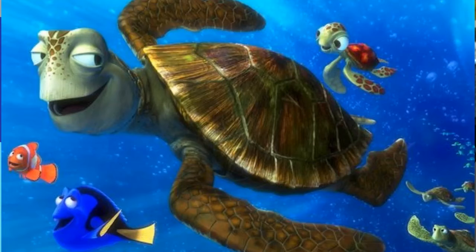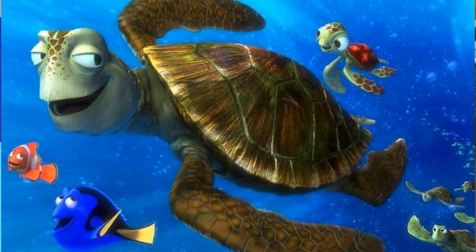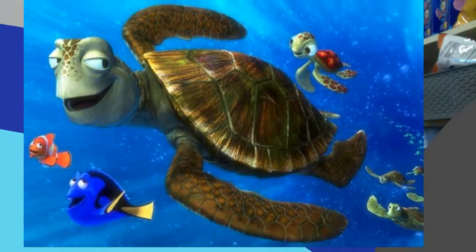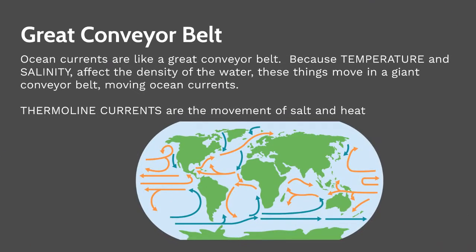When we talk about currents and the conveyor belt of the ocean, a really good visual is the Finding Nemo movie when they go into that great current — I forget what they call it in the movie, but they're traveling in this current and it makes it easier for the animals to travel. The water is warmer in the movie. Ocean currents are like a great conveyor belt. Temperature and salinity affect the density of water, and these things move in a giant conveyor belt moving the ocean currents. Thermohaline currents are the movement of salt and heat.